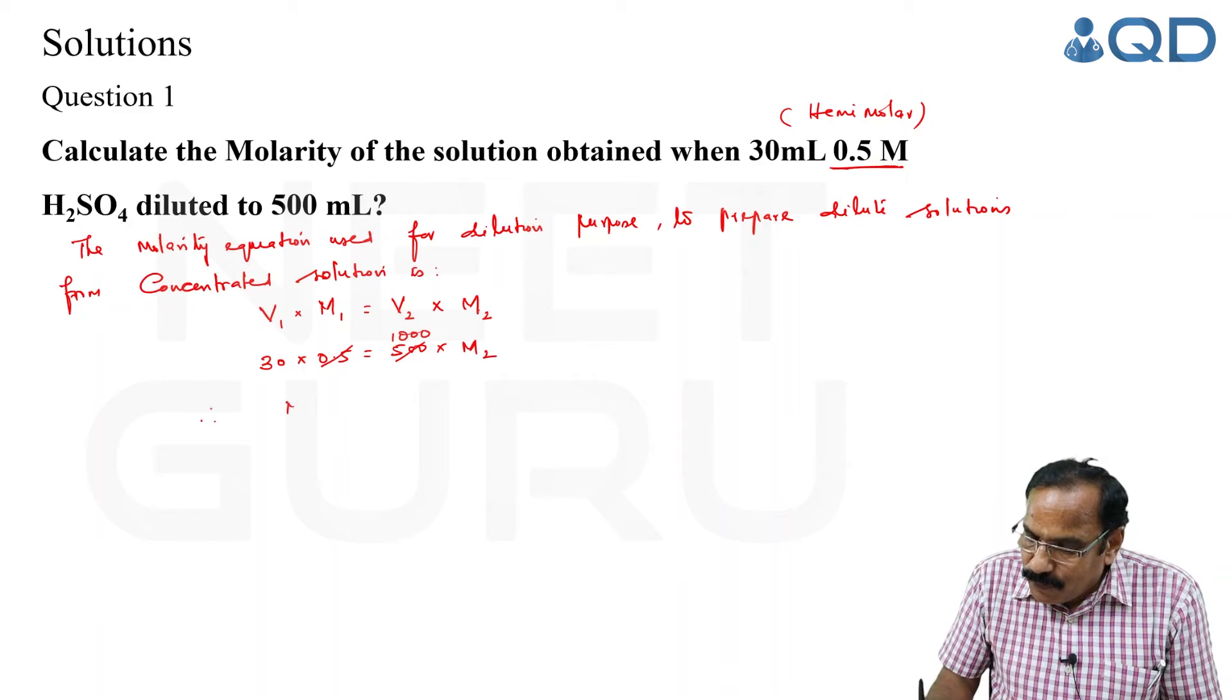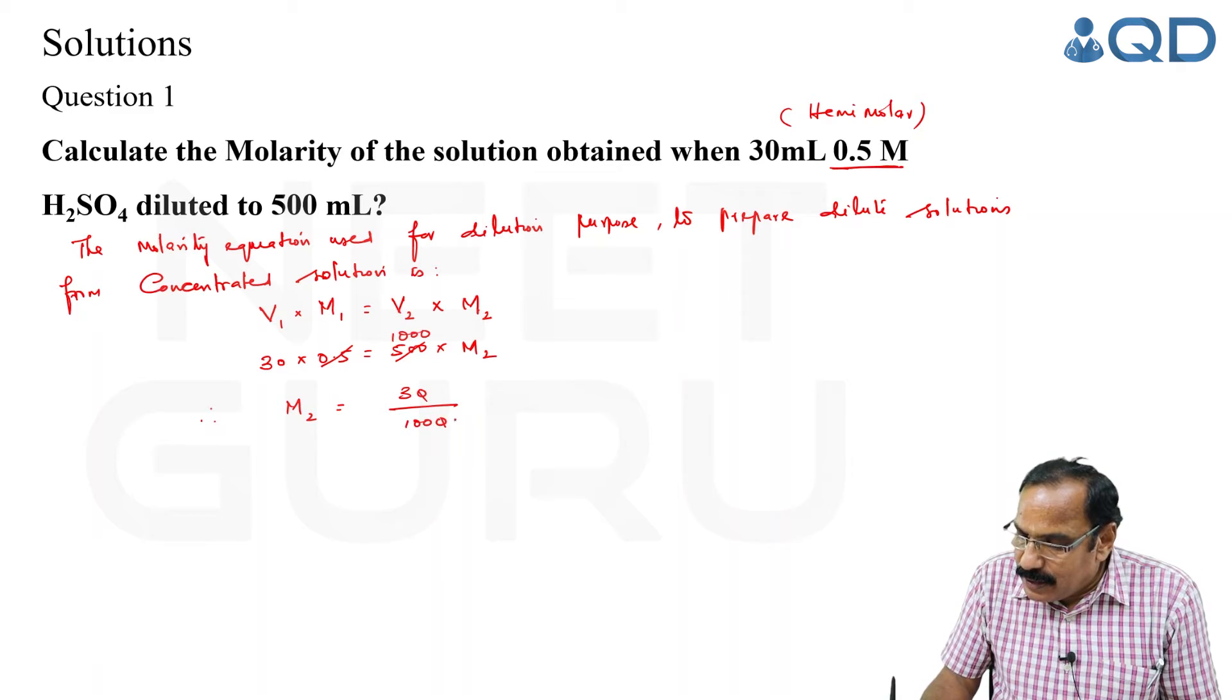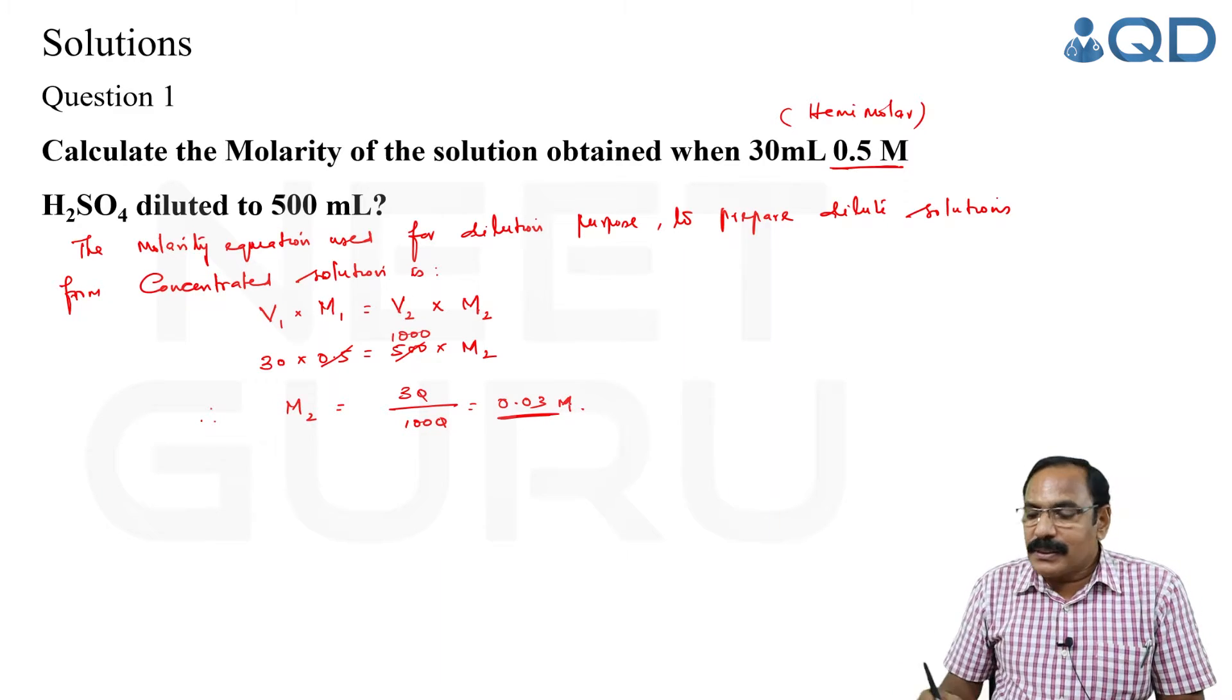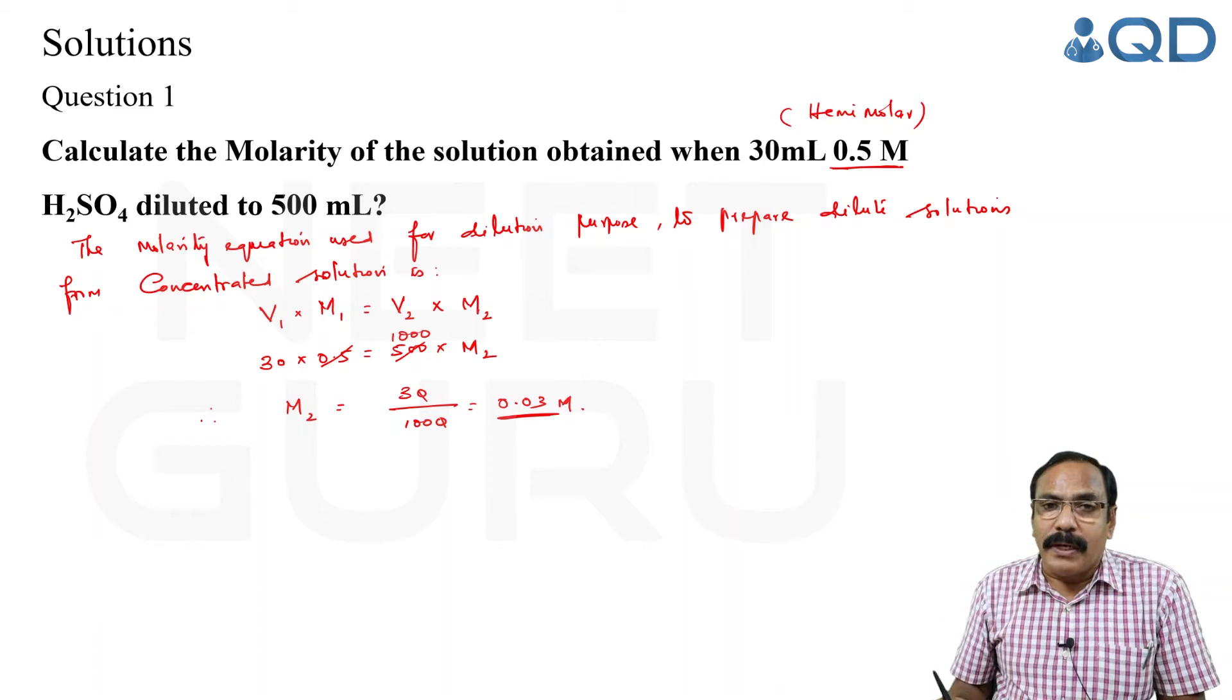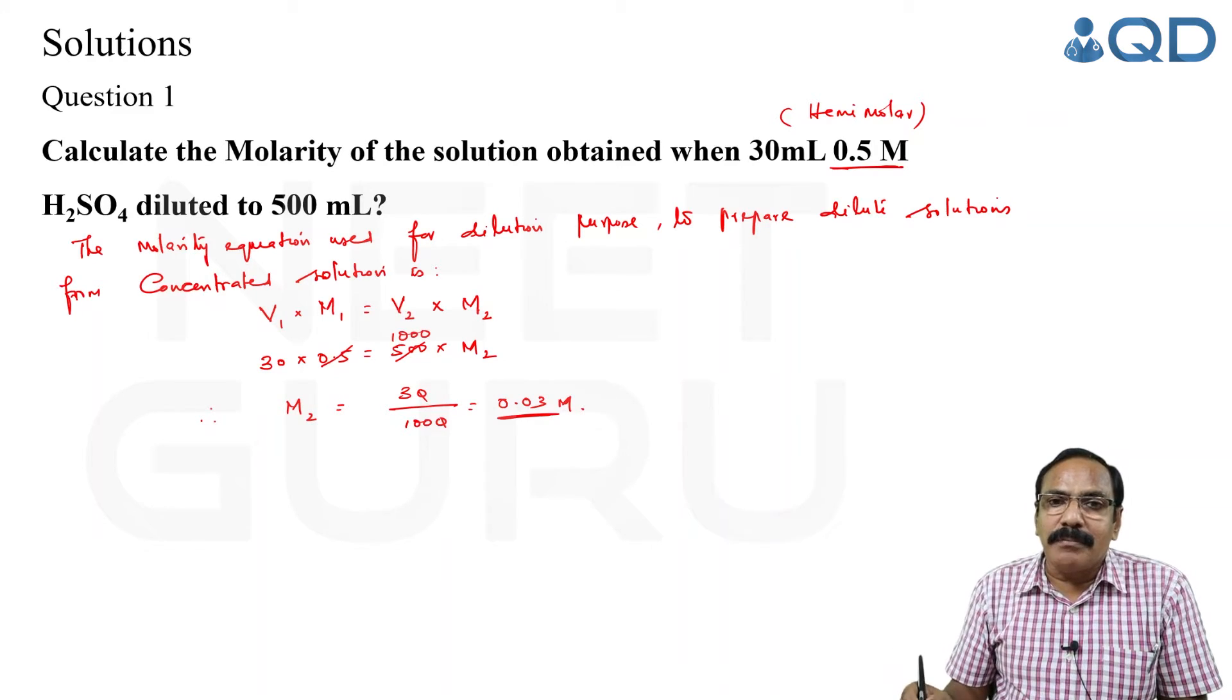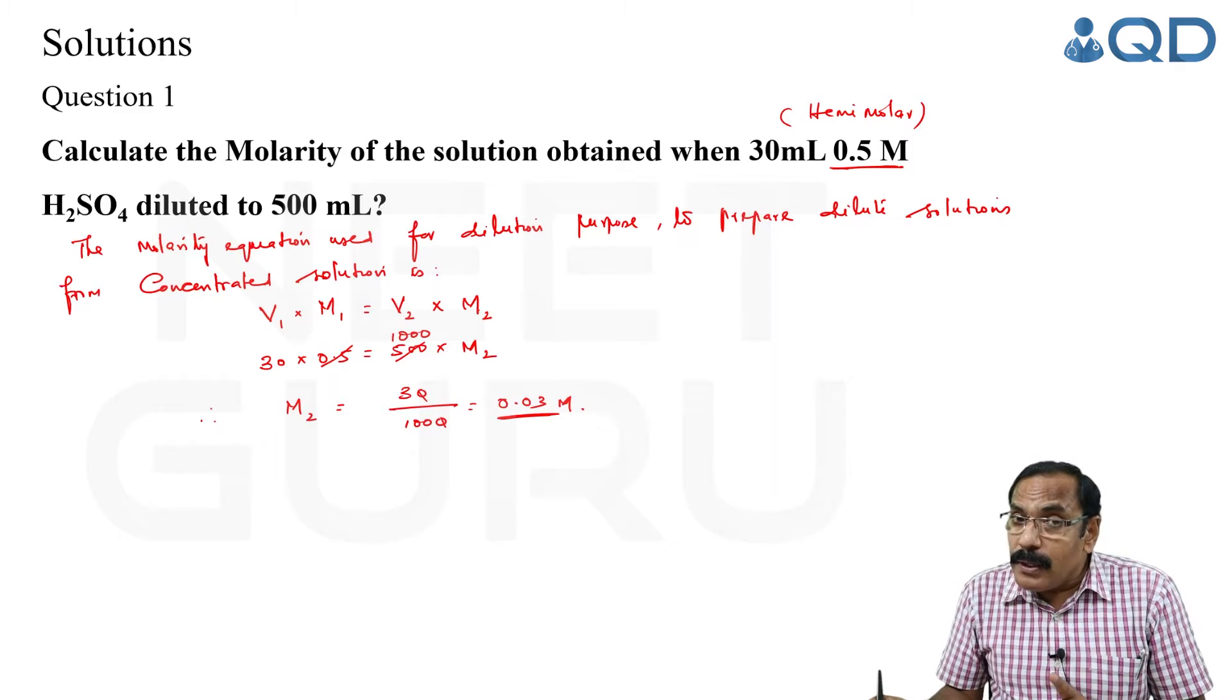Therefore, final molarity of the solution is 30/1000 or 0.03 M. You see, semi-molar becomes 0.03 molar. So you are preparing dilute solution using the molarity equation. Remember, it is only for dilution.